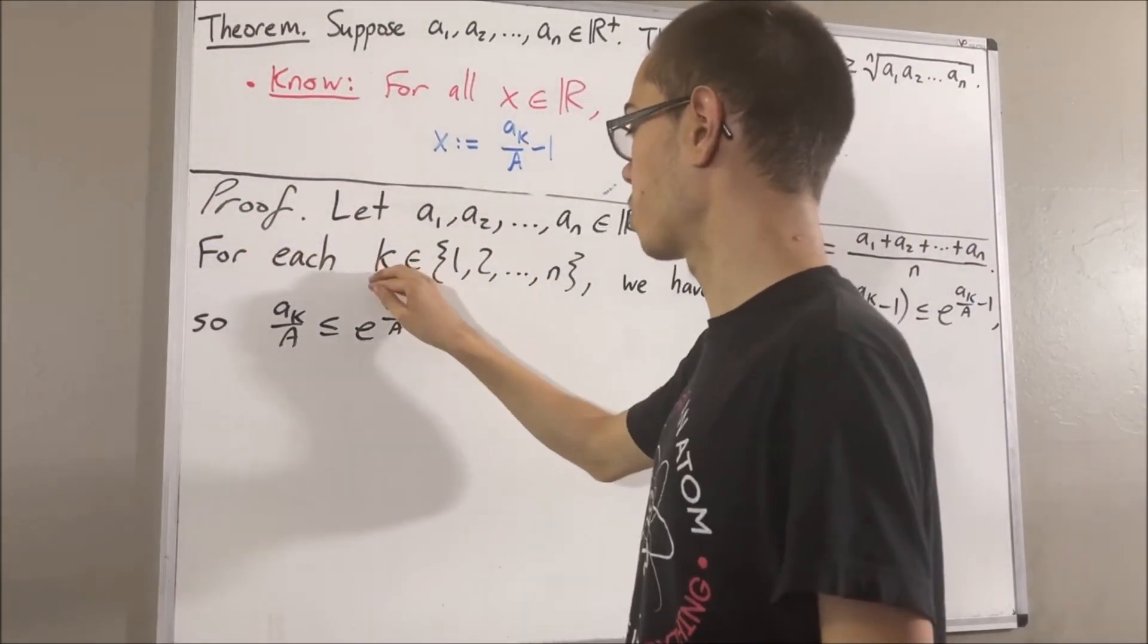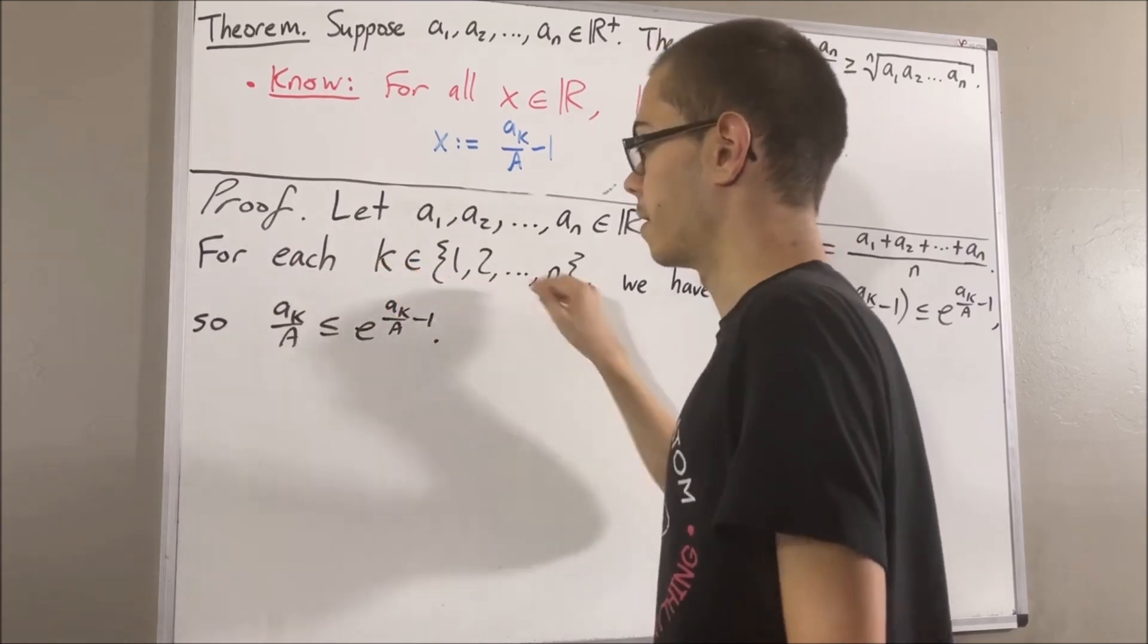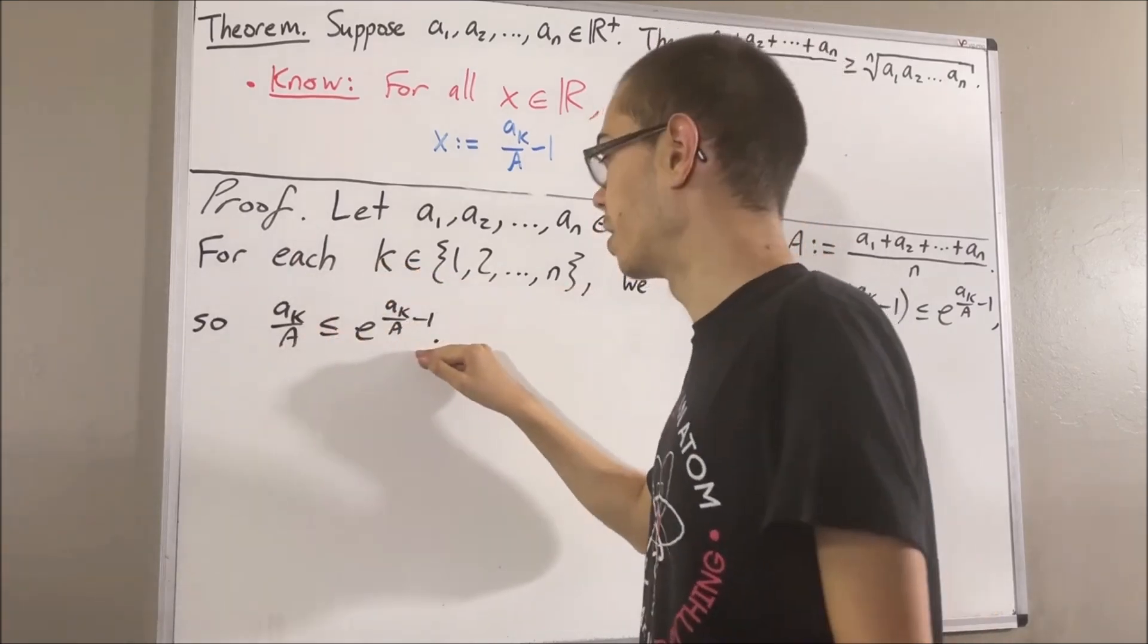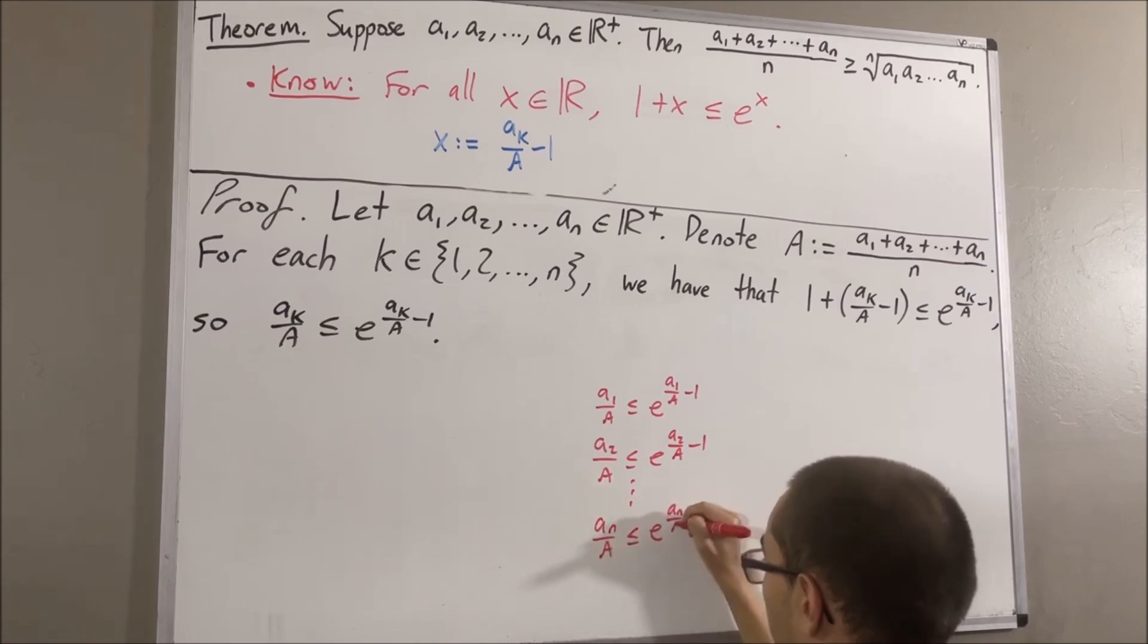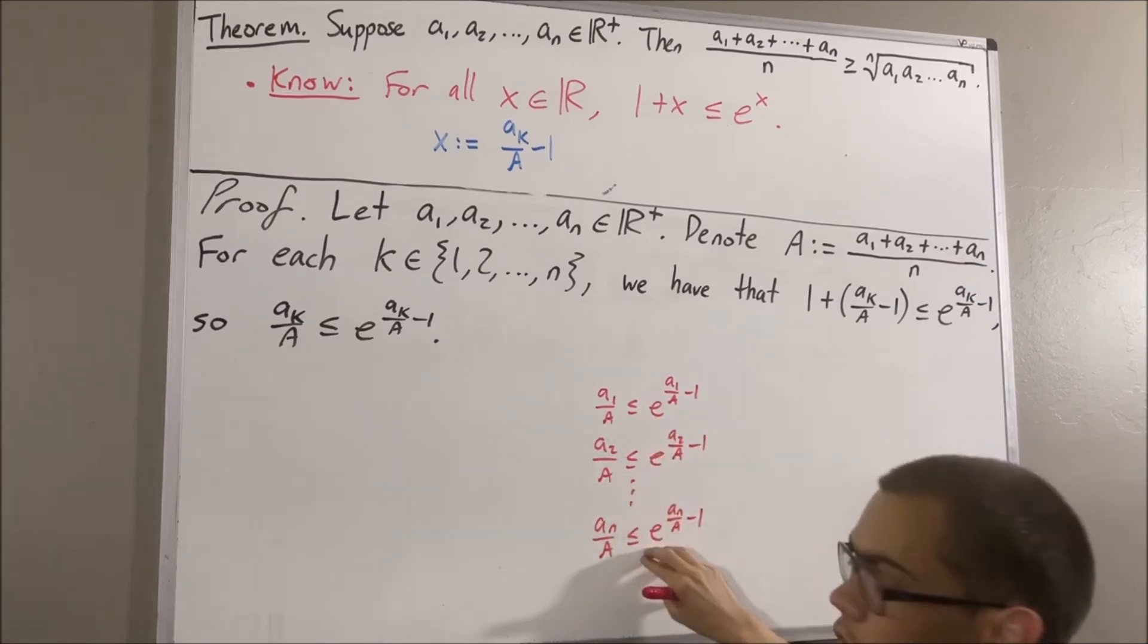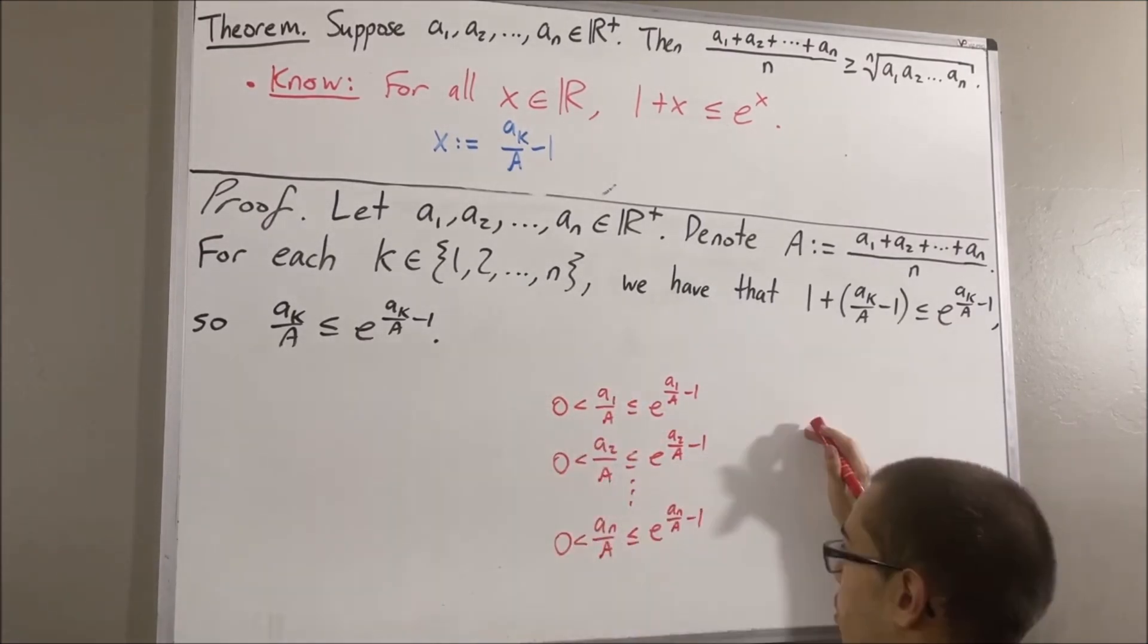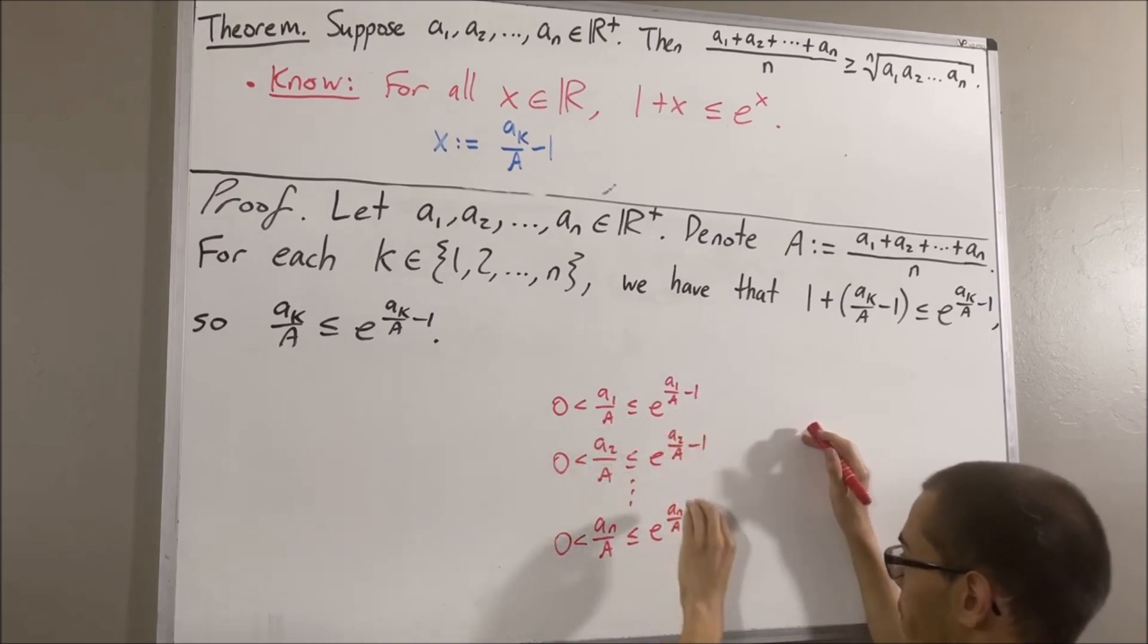So, for all integers k between 1 and n, this inequality is true, which means all of these inequalities are true. And we know that all of these guys are greater than 0. Therefore, we should have that the product of all of these guys is less than or equal to the product of all of these guys.